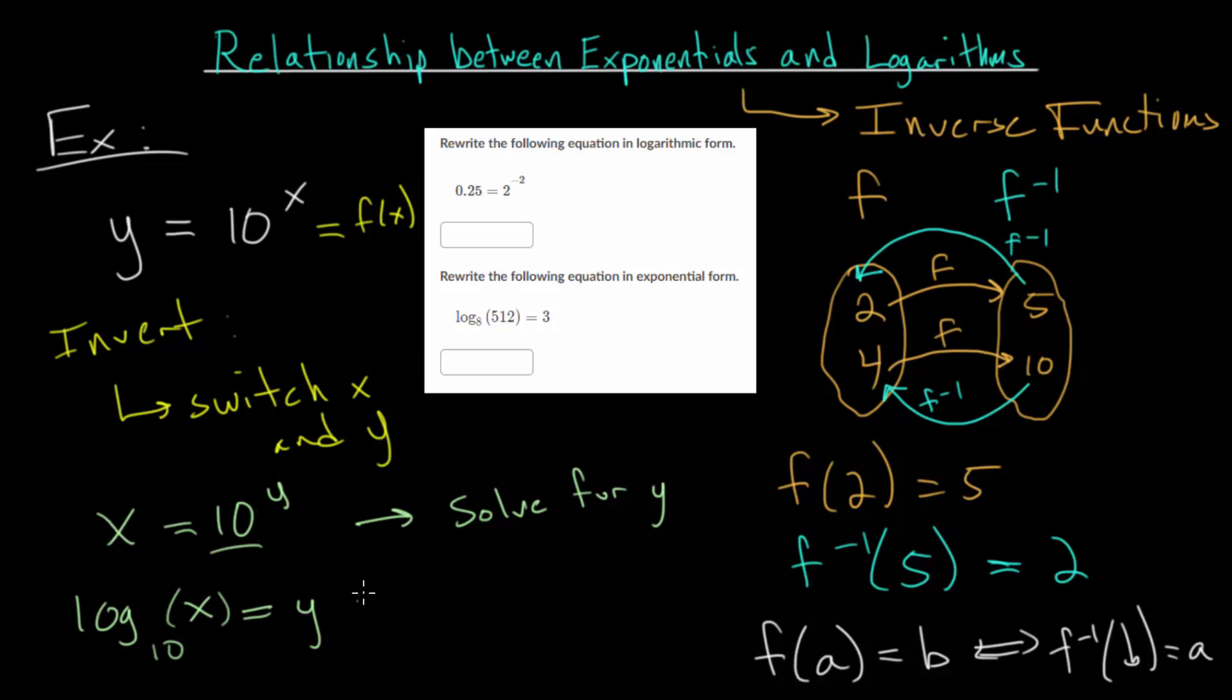So we have this new equation, y = log base 10 of x, which, like I mentioned, we can really just write as log(x), since this is the common log, and base 10 is just implied here. Now, since we solve for y after switching x and y, this is now equal to the inverse function.